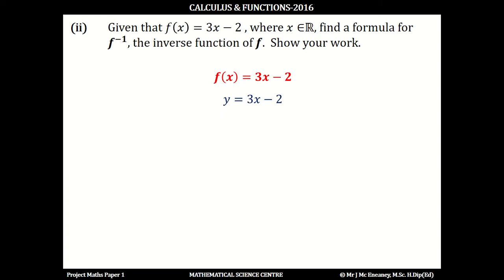And if we want to find an inverse function, what we're going to do is we're going to swap the x and the y values. So that means we're going to get x equals 3y minus 2. So we just replace this y with an x, and replace this x with a y. And then we're going to try and get y on its own.